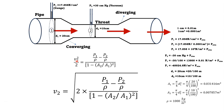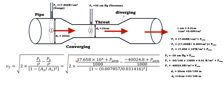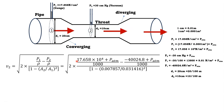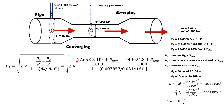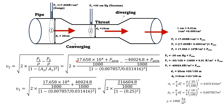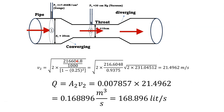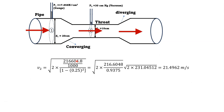Plugging all values into the equation: P1/ρ = 17.658 × 10⁴ / 1000, and P2 includes the vacuum term −40024.8 N/m². After substituting the area ratio A2/A1 and performing the calculation, we solve for V2.